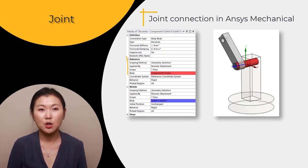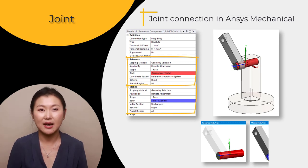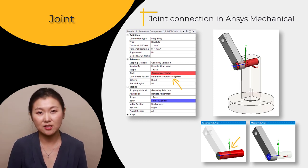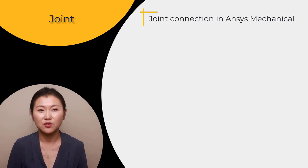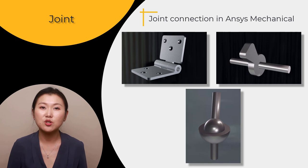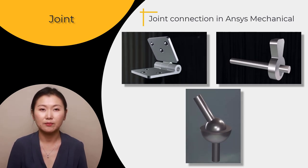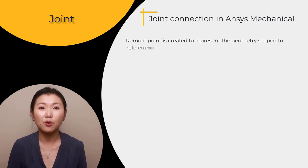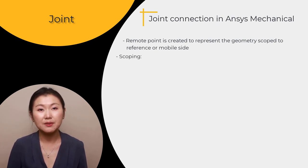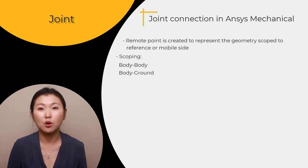For the setup of joints, we need to identify the reference side and the mobile side. The joint degree of freedom and measurements are taken from the reference side through a reference coordinate system. We think of any motion of the joint as measuring the movement of the mobile side with respect to the reference side. In ANSYS Mechanical, when we scope a geometry part for reference or mobile, a remote point is created to represent the scoped geometry. Similar to spring and beam connections, joints can also be defined as body-to-body or body-to-ground. For body-to-ground, the reference will be the ground side.